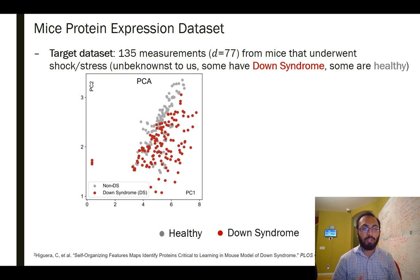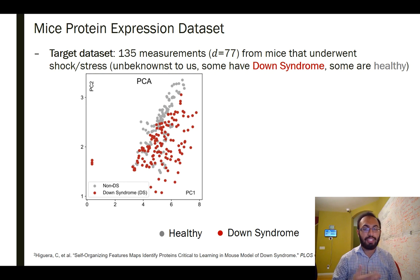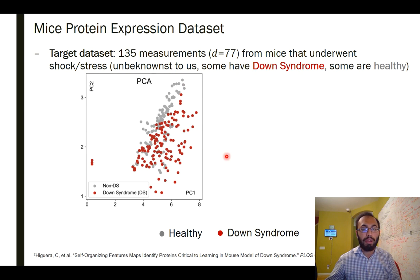I think this is best illustrated with an example. This is a public data set consisting of protein expression from mice. The data set consists of 135 measurements from mice that have undergone some sort of shock or stress therapy. We're going to assume that, unknown to the analyst, some of the mice have Down syndrome and some are healthy. Because Down syndrome versus healthy represents a significant phenotypic difference, we would hope PCA would pick up this difference. But when we do PCA from 77 dimensions down to two dimensions, we see no such clustering — pretty much all of the mice follow a similar distribution regardless of whether they are healthy or have Down syndrome.